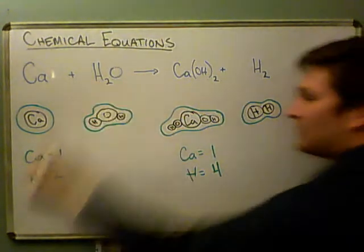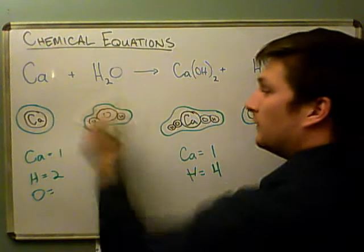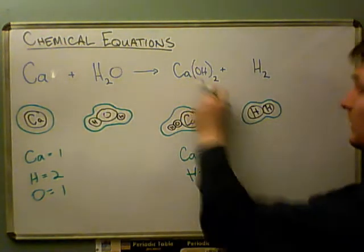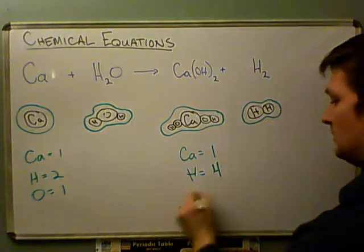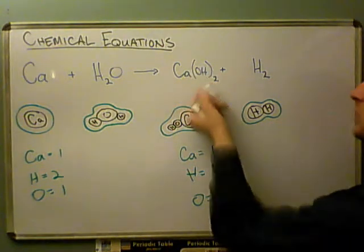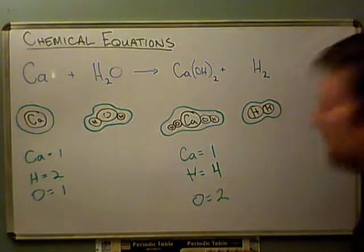Now, over here, finally, we have oxygen. And I only have one of them, one oxygen total. And over here, I have two oxygens, right? Because we had the OH, and we had two of those OHs, so we have two oxygens.